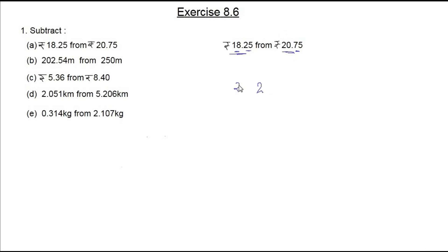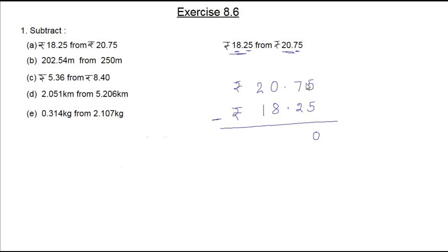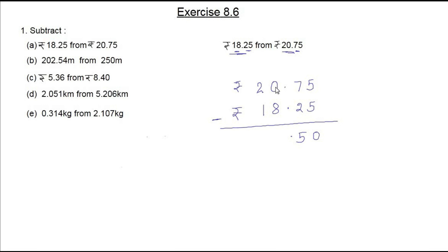Now subtracting: 5 minus 5 is 0, 7 minus 2 is 5. We put the decimal point as it is. Then we have 0, and it is not possible to subtract 8 from 0, so we take a borrow from 2. The 2 becomes 1 and the 0 becomes 10. So 10 minus 8 is 2, and 1 minus 1 is 0. Our answer is rupees 2.50.